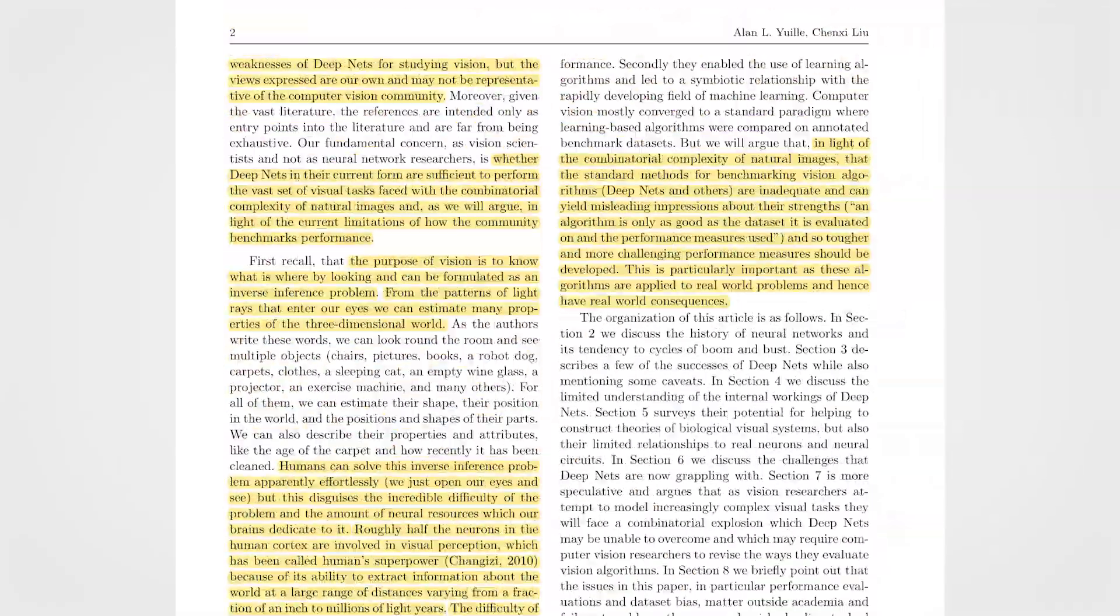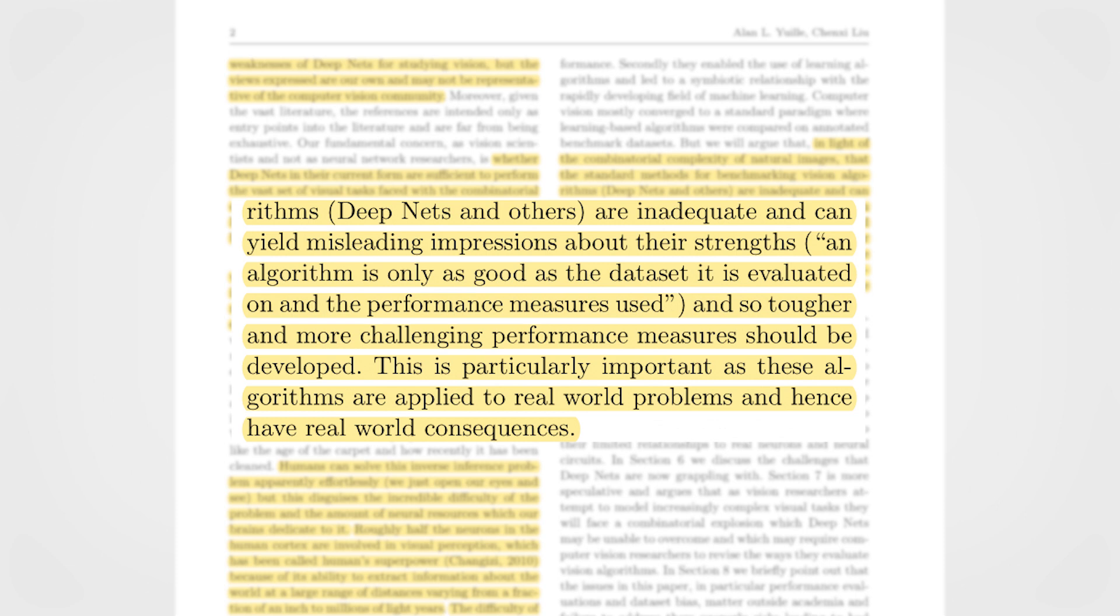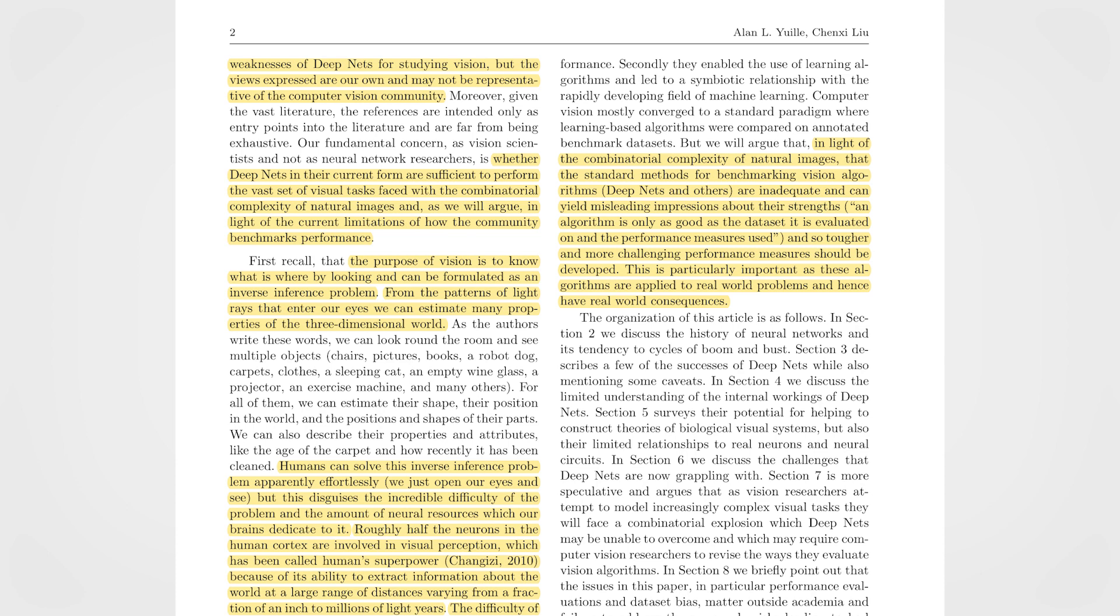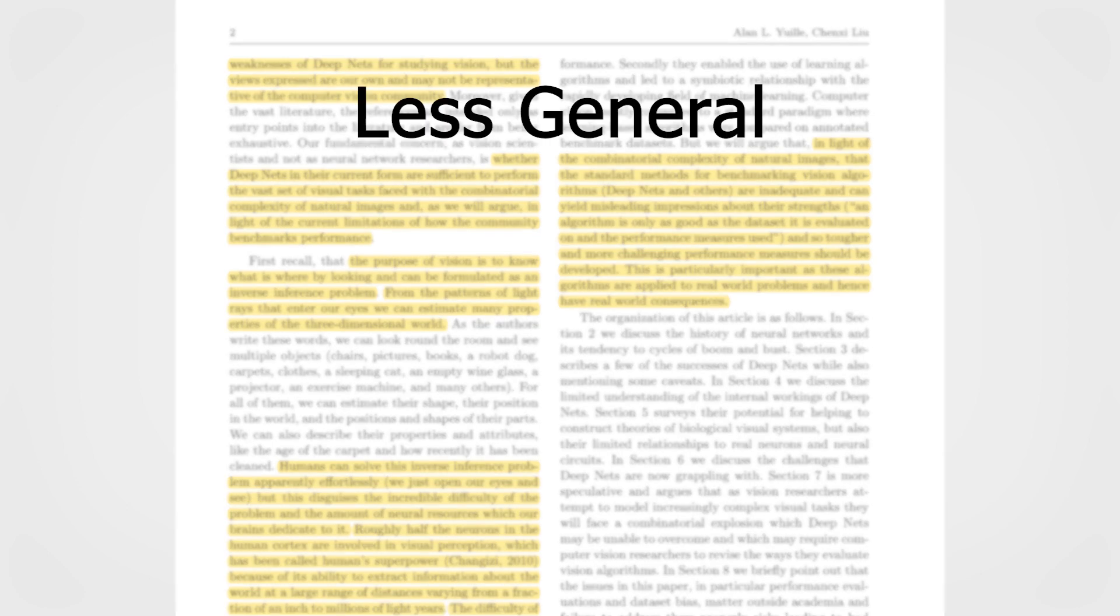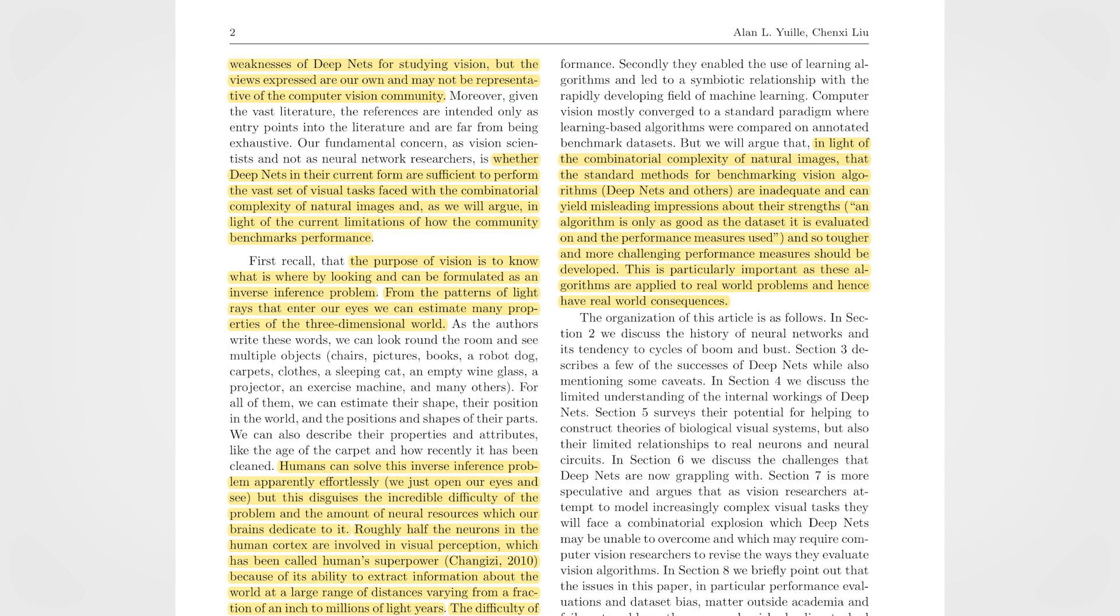As they mention, and as we often see on Twitter and article titles, there are biases due to the dataset these deep nets are trained on. Since an algorithm is only as good as the dataset it is evaluated on, and the performance measures used. This dataset limitation comes with the price that these deep neural networks are much less general-purpose, flexible, and adaptive than our own visual system.